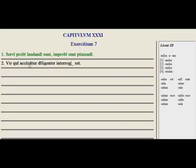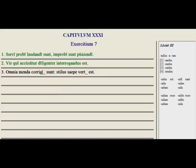Vir qui accusatur diligenter in blank est — a man who is accused needs to be questioned carefully. Matching up vir with our gerundive here, we get interrogandus est. Go ahead and work on the rest of those, and let's go on to exercise number eight.